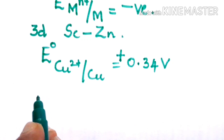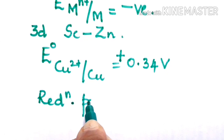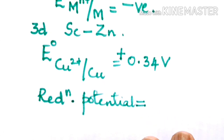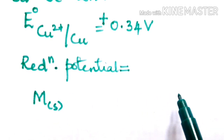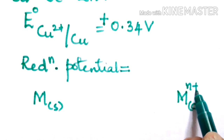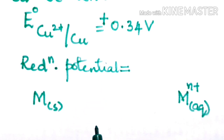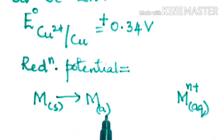For copper, the reduction potential is the total sum of all the energy changes occurring when a metal in the solid state is converted to a metal ion in the aqueous state. The energy changes involved determine the reduction potential. First, the metal in the solid state is converted to metal in the atomic state.